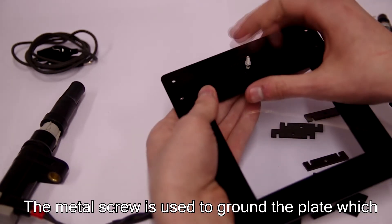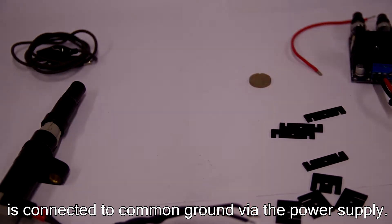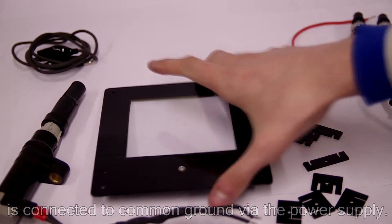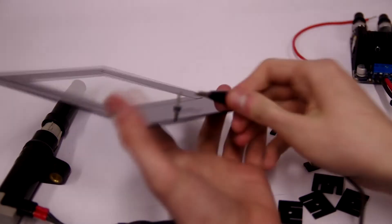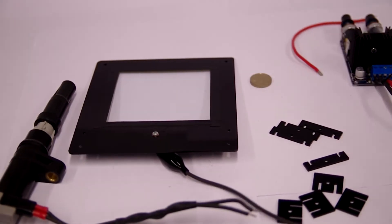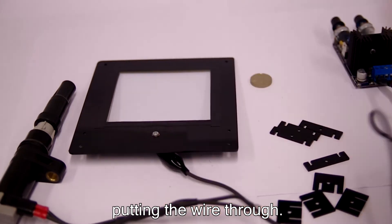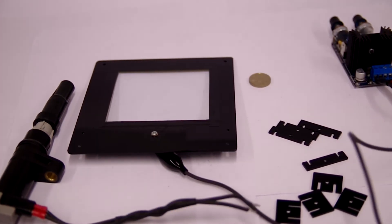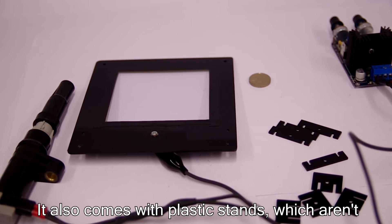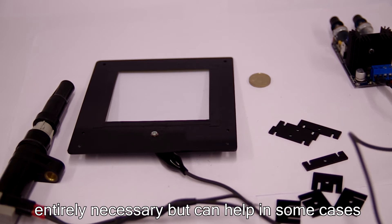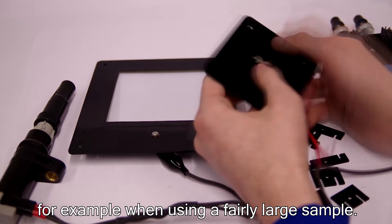The metal screw is used to ground the plate which is connected to the common ground via the power supply. The kit comes with a sample table, which is what I'm putting the wire through. It also comes with plastic stands which aren't entirely necessary but can help in some cases, for example using a fairly large sample.